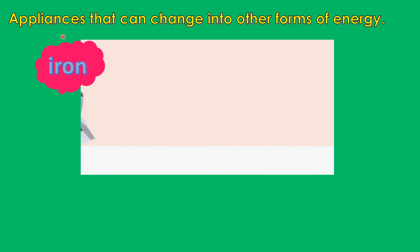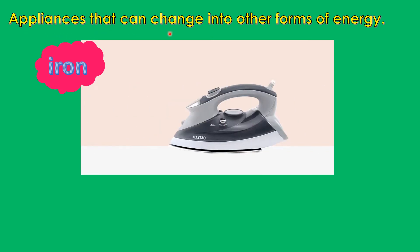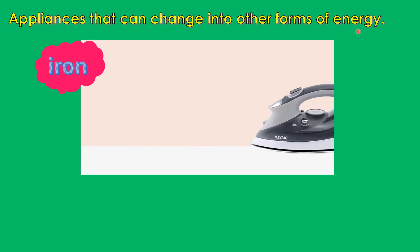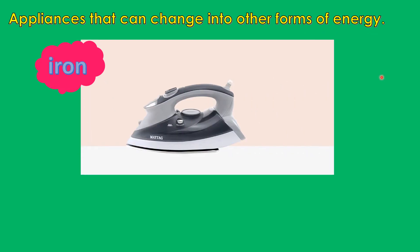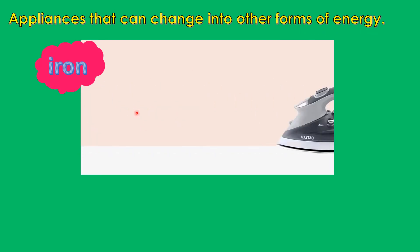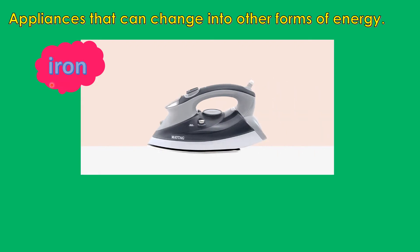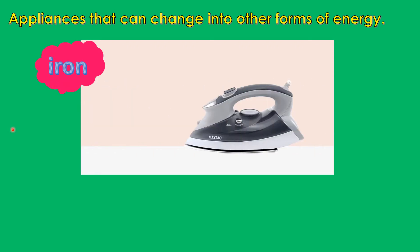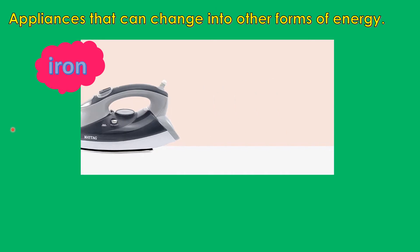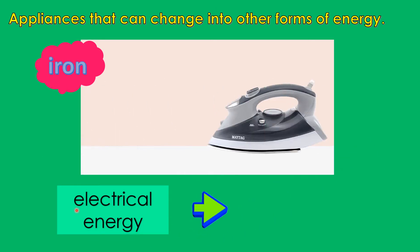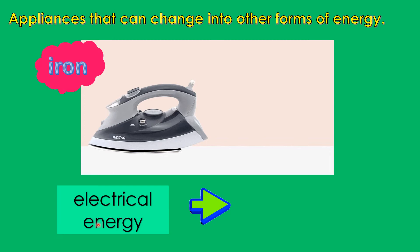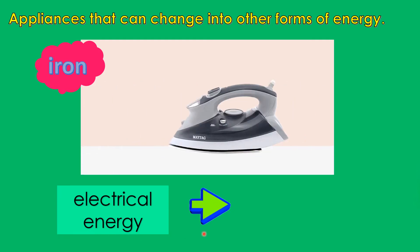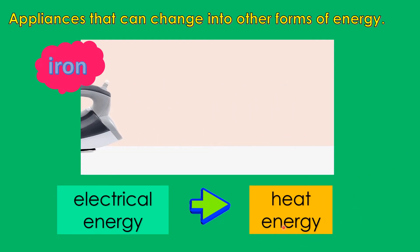There are appliances that can change into other forms of energy. For example, look at the picture — it is an iron. What energy transformation takes place in an iron? First, it is electrical energy. Then it will transform to heat energy.